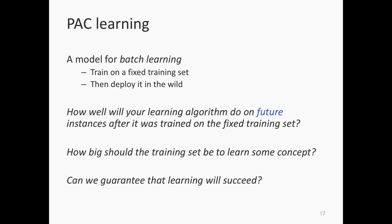PAC learning specifically tries to answer: how big should your training set be to get some guarantee that your final classifier will have no more than a certain error? And can we guarantee that learning will succeed? What if you just got unlucky with your 500 examples and they were all so noisy that you couldn't succeed? What's the probability we can assign to the success of learning? PAC learning tries to tie all these things together into one theoretical framework.